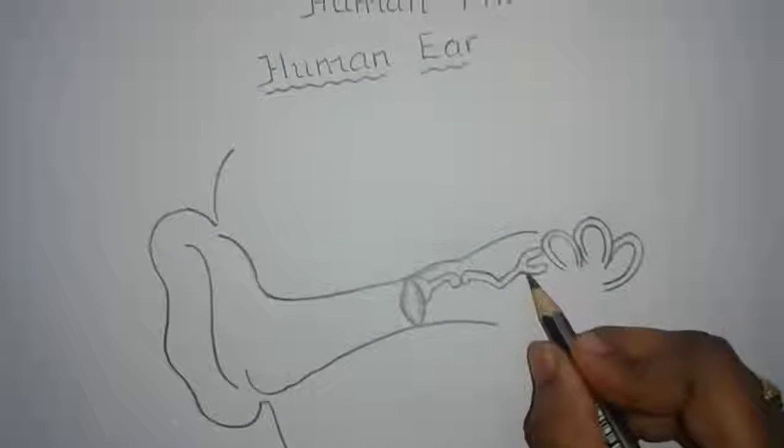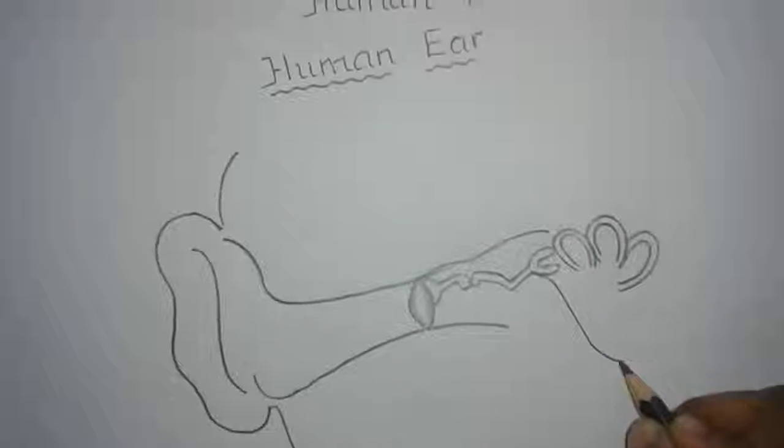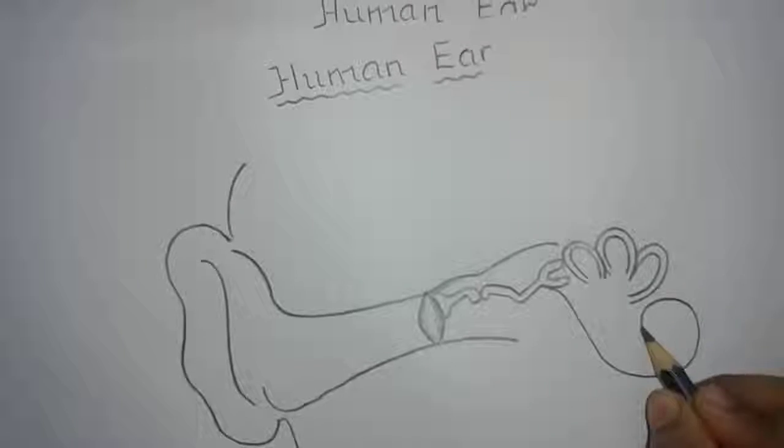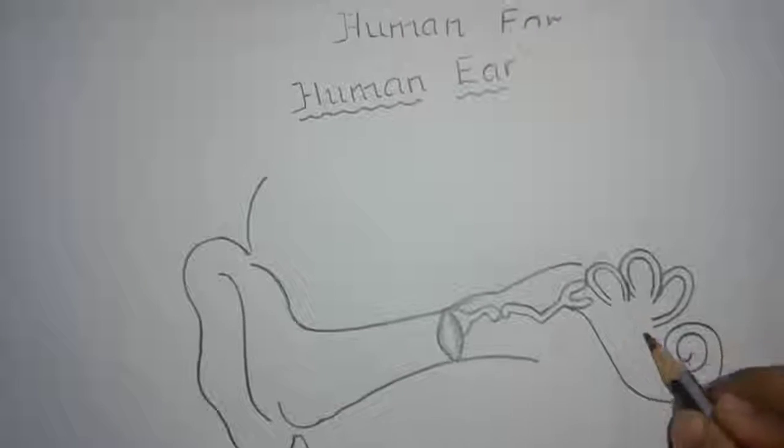The lower part of the inner ear is called sacculus and it has an appendage called the cochlea. Draw the cochlea like this. This is the cochlea.